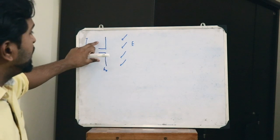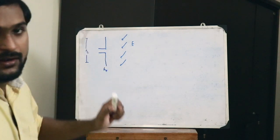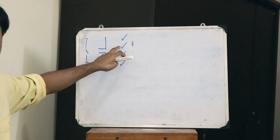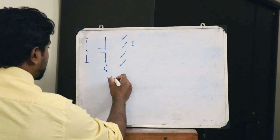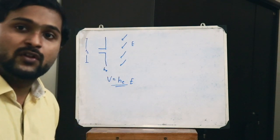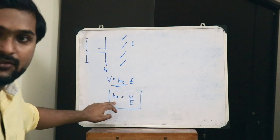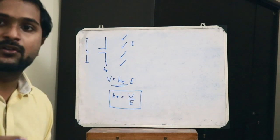When this dipole antenna is placed in the electric field, a particular voltage is induced onto it. We know that when a conductor is placed in an electric field, that field induces a certain voltage onto the conductor. Similarly, the electric field induces a voltage on this dipole antenna. We can express this voltage as V is equal to HE into E. From this, the effective height is given as HE is equal to V by E. This is how we practically obtain the expression for the effective height of a dipole antenna.